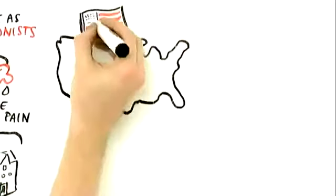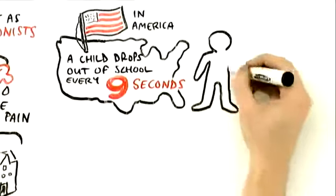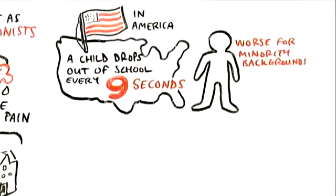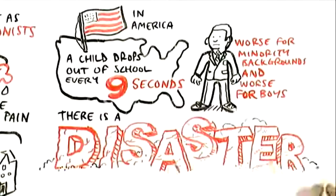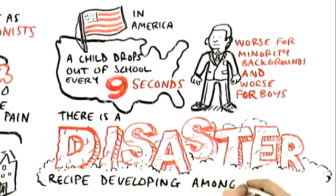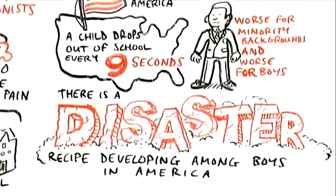In America, a child drops out of school every nine seconds. This is worse for kids from a minority background, and it's worse for boys than girls. There's actually a disaster recipe developing among boys in America, literally dropping out of high school, college, and it's not simply poor performance.